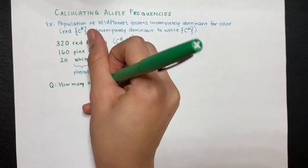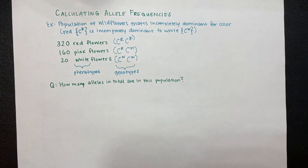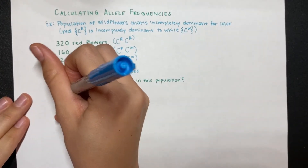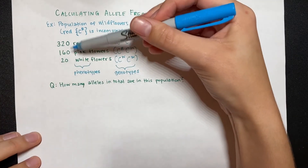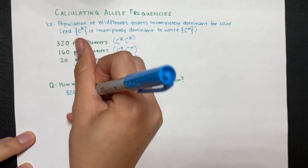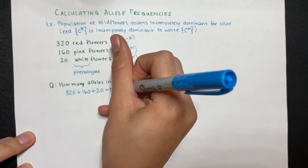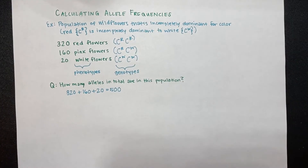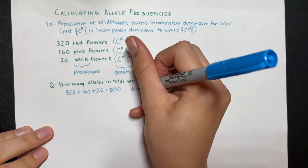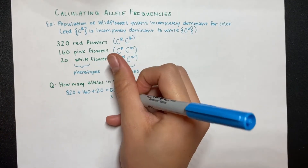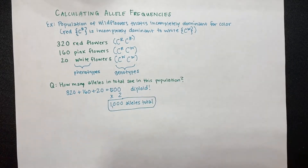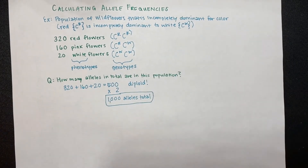If asked how many alleles in total are in this population, first count the total number of individuals: 320 plus 160 plus 20 equals 500. Remember that these individual flowers are all diploid, and diploid individuals have two copies of each allele, so you multiply by two — there are 1,000 alleles total.